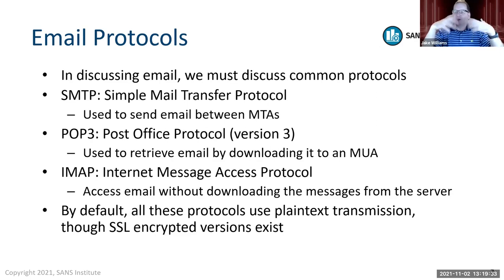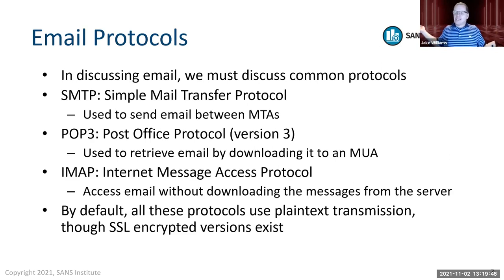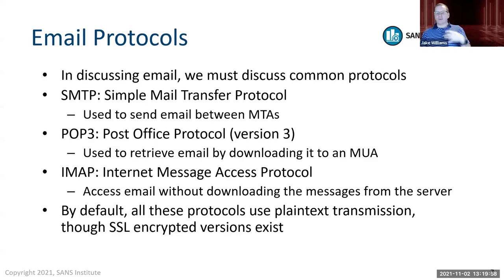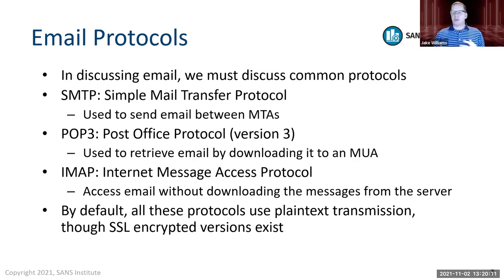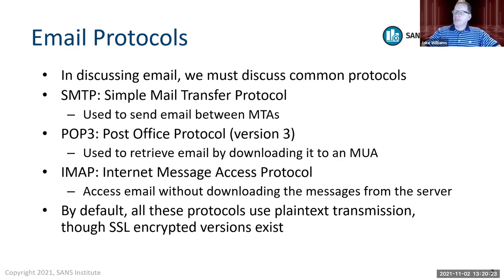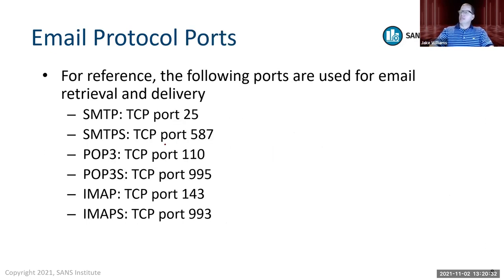IMAP effectively downloads messages on demand, supporting synchronization across multiple devices transparently. With mobile, you don't want to drag all your email down - you only have so much bandwidth and space. IMAP gives you the 'channel preview' and then fetches the full body when needed. By default, all these protocols use plain text transmission, although SSL-encrypted versions exist.